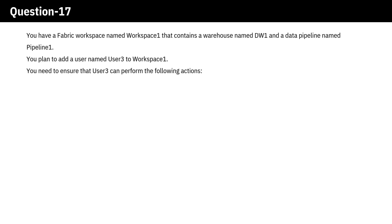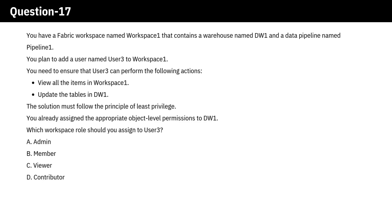You plan to add a user named User 3 to Workspace 1. You need to ensure that User 3 can perform the following actions: view all the items in Workspace 1, and update the tables in DW1. The solution must follow the principle of least privilege. You already assigned the appropriate object-level permissions to DW1. Which Workspace role should you assign to User 3?